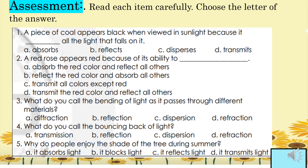Number three: what do you call the bending of light as it passes through different materials? A, diffraction; B, reflection; C, dispersion; or D, refraction. Number four: what do you call the bouncing back of light? A, transmission; B, reflection; C, dispersion; or D, refraction. Number five: why do people enjoy the shade of the tree during summer? A, it absorbs light; B, it blocks light; C, it reflects light; or D, it transmits light.